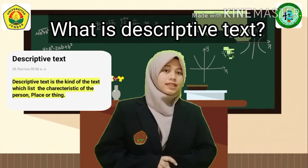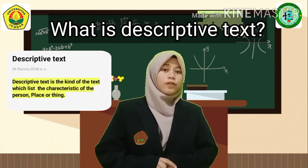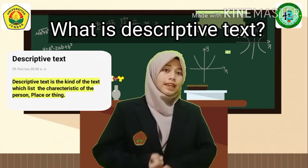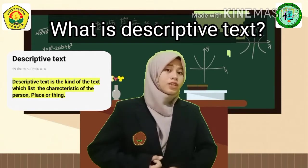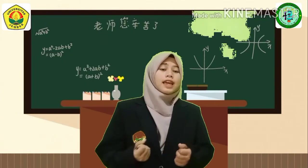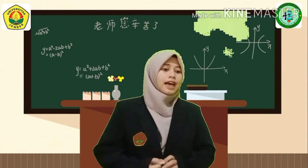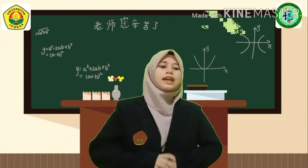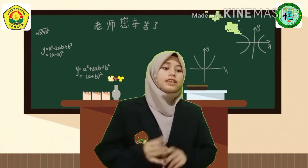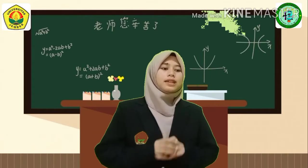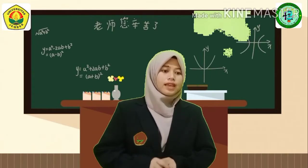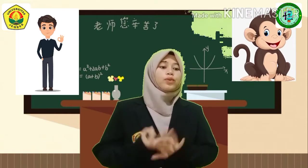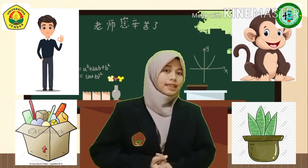Descriptive text is the kind of text which describes the characteristics of a place, person, or thing. Descriptive text adalah salah satu jenis text dalam bahasa Inggris yang menggambarkan sifat-sifat yang melekat pada sesuatu — baik itu manusia, hewan, tumbuhan, maupun benda mati.